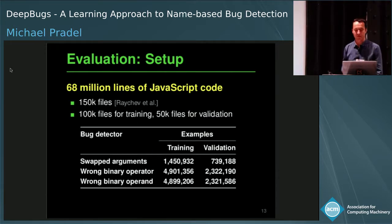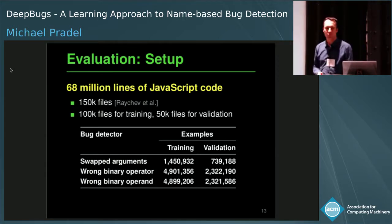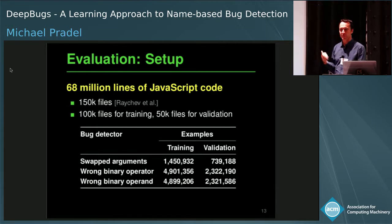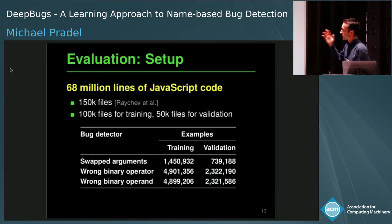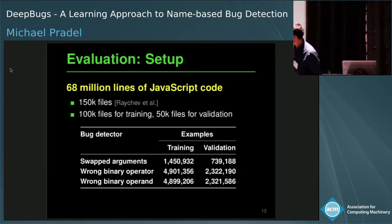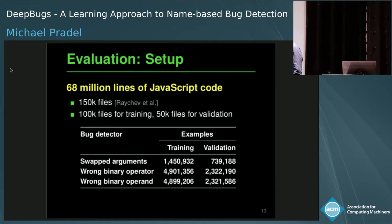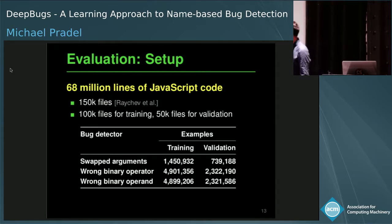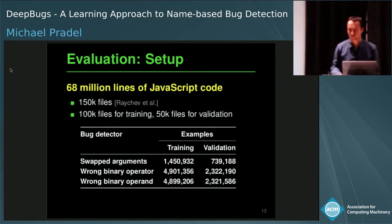We have implemented this tool for JavaScript code. The idea is largely language-independent, but works particularly well for dynamically typed languages because in the absence of type information, identifier names are the next best source of signal. We use 86 million lines of code — two-thirds for training, one-third for validation — and get millions of examples for each of the three bug patterns by artificially injecting bugs.